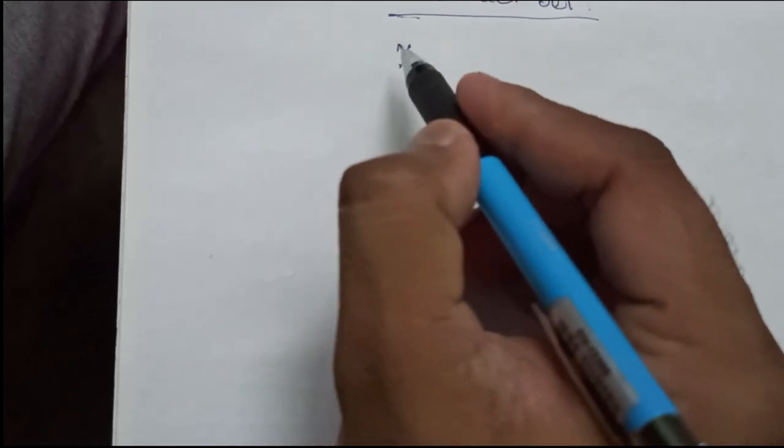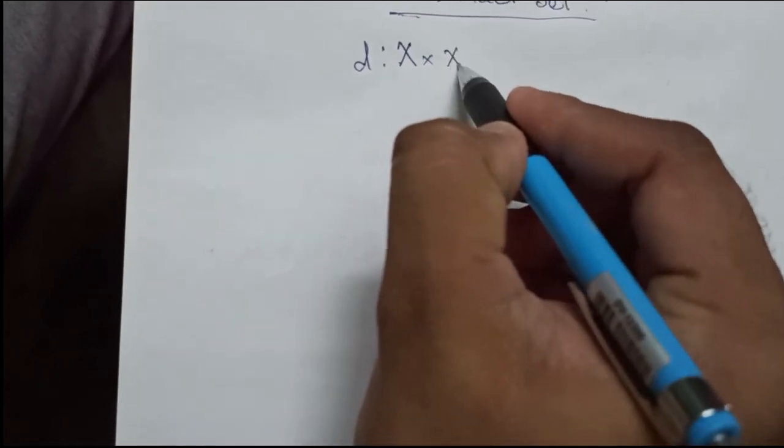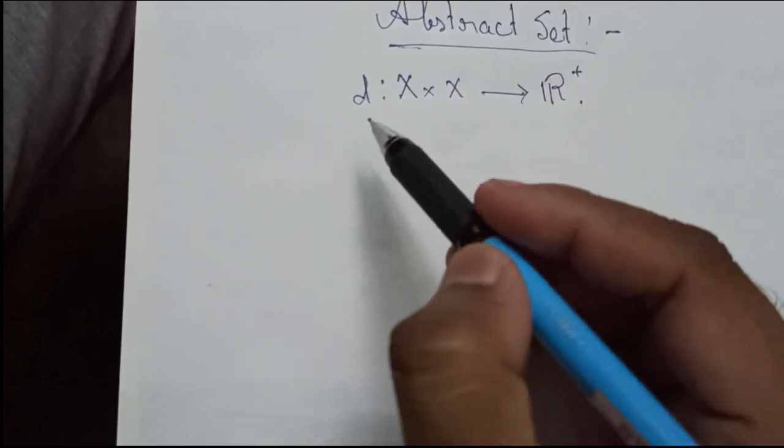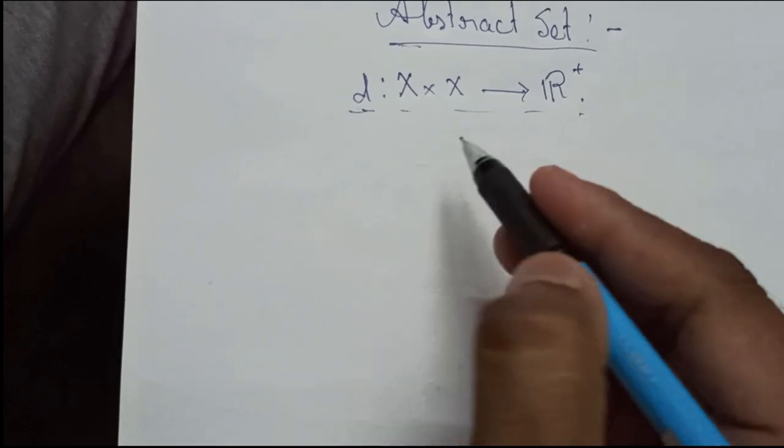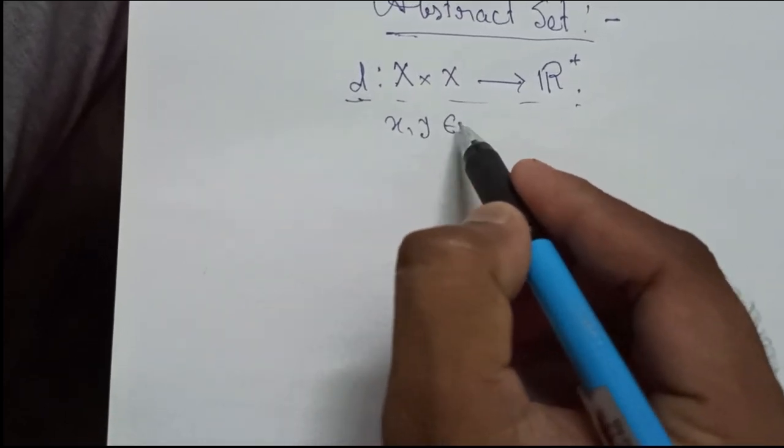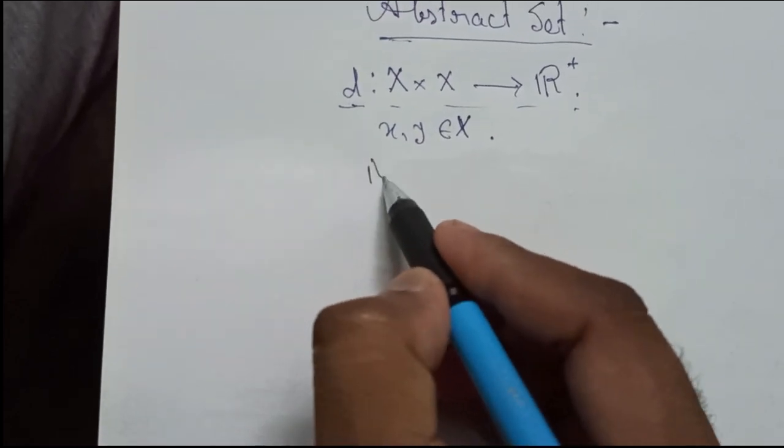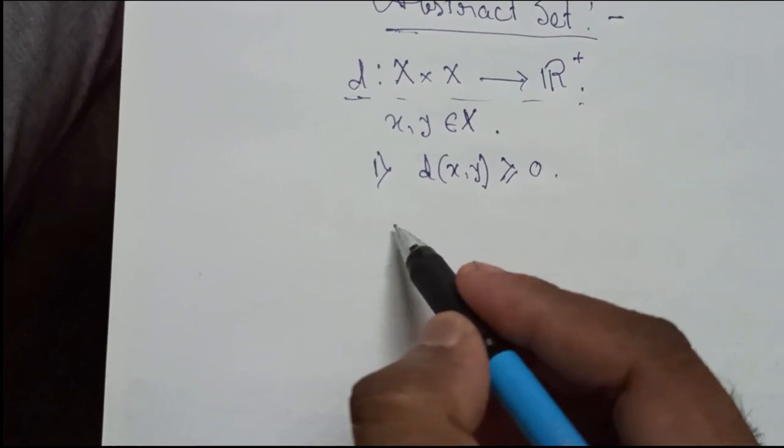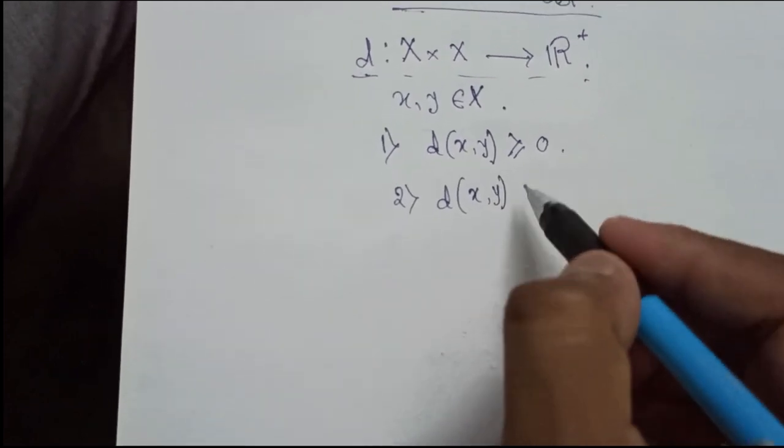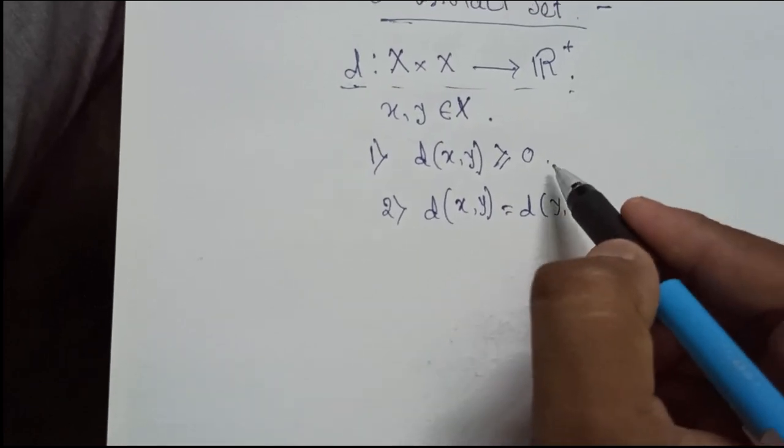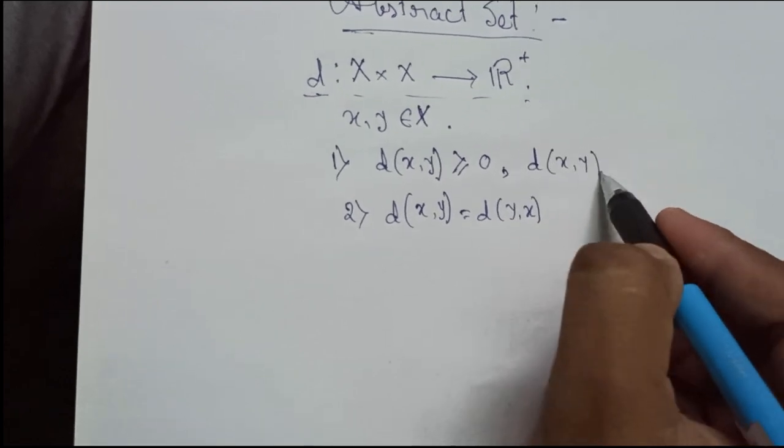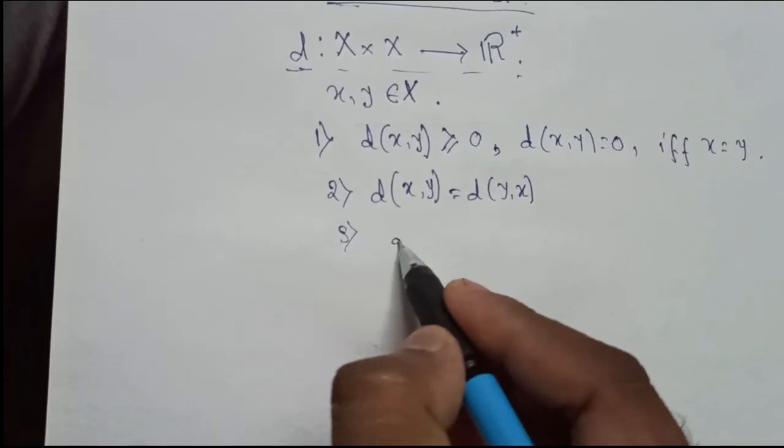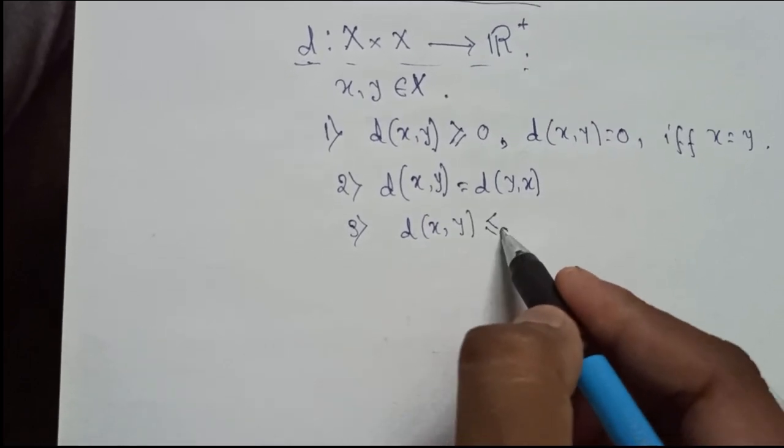So an abstract set X, I can say that I am defining a function d from X cross X to R. See how the concept of this metric or distance function has been generalized. Now it says if x and y belongs to this abstract set X then there are three properties. First of all d(x, y) should be greater or equal to zero, this is the positiveness. And the second one is symmetry, d(x, y) is equal to d(y, x). Little thing here, this equality occurs or d(x, y) equals zero if and only if x equals y. And the last thing is that d(x, y) is less equal to d(x, z) plus d(z, y).